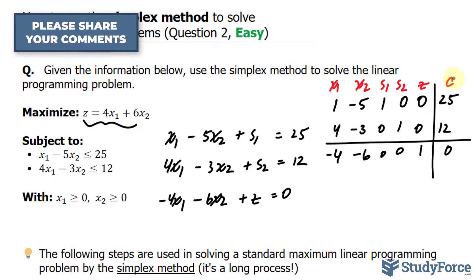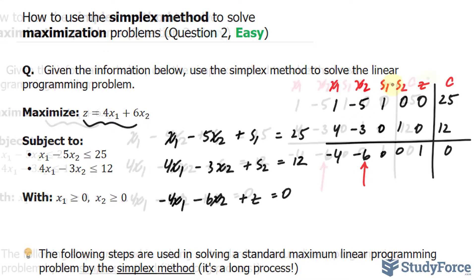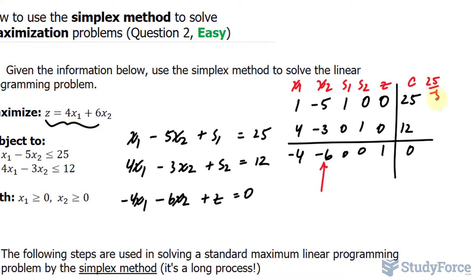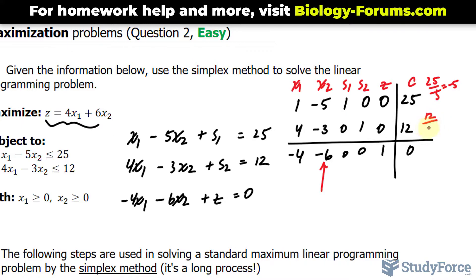Now that we've got it to this stage, we want to analyze the numbers here at the bottom. And you want to find the most negative number. So the most negative number is negative 6. And that will be our indicator. So specifically, what we're going to do is take 25 and divide it by this number, and we end up with negative 5. In addition, we'll take this 12 and divide it by negative 3, and we end up with negative 4.